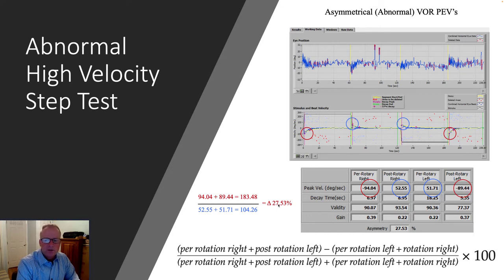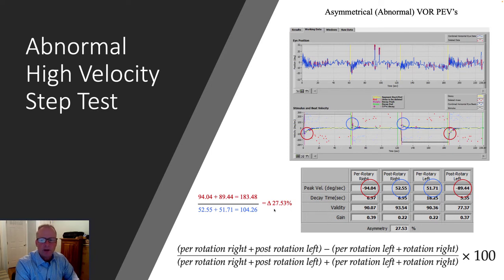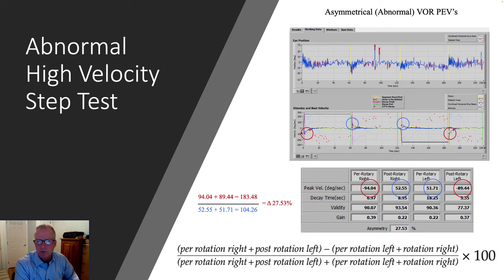In this case, the difference is 27%. You can use the 20% or 22% difference threshold that you use for caloric here to represent or signify an asymmetry in the response. And you can somewhat see this in the raw data as well.